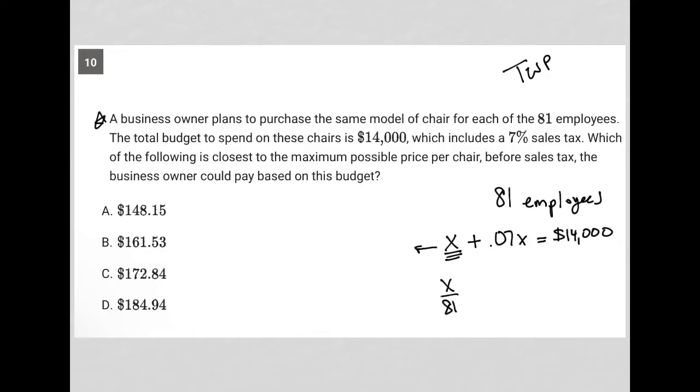So I can actually solve this equation because X plus 0.07X is just 1.07X. So if I have 1.07X equals 14,000, I can divide both sides of that equation by 1.07. Go to my calculator. 14,000 divided by 1.07 is equal to $13,084.11. So that's how much they can spend on all 81 chairs before adding the 7% tax to get them up to 14,000.